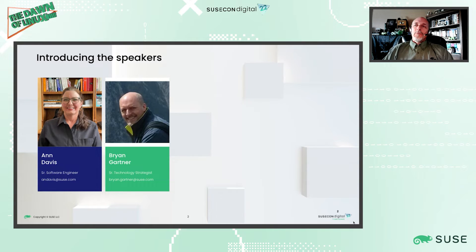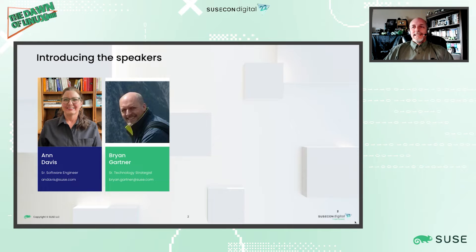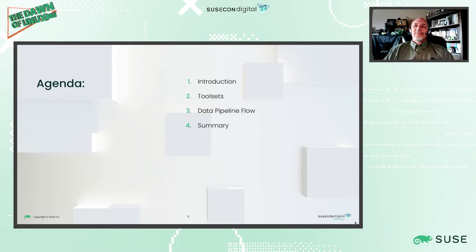My name is Brian Gartner. I work on the Alliances team. I'm a senior technology strategist. I work with hardware partners, software partners, and embedded partners. Been here for about almost a decade — way less than Anne.